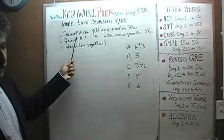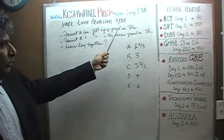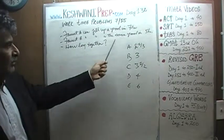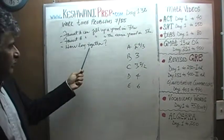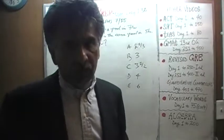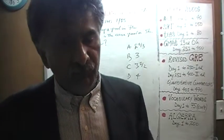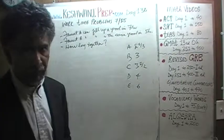We are told that faucet A can fill up a pool in 7 hours. We are told that faucet B can fill up the same swimming pool in 5 hours. The question is, how long will it take them working together at their constant paces to fill up the pool? Let's see what we can do here.